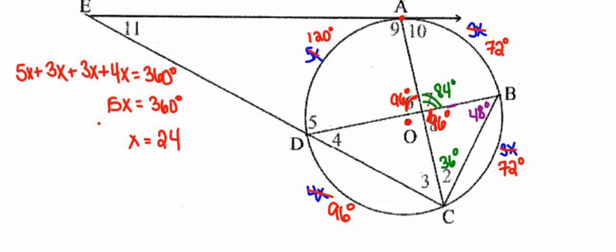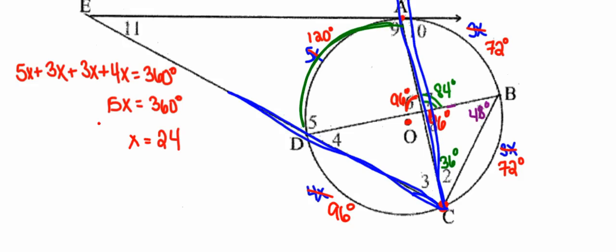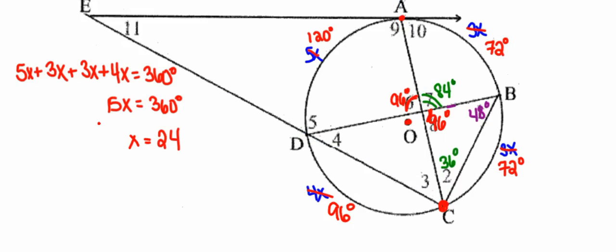Next is angle 3. Its vertex is on the circle, so it's an inscribed angle and its degree measure is half that of its intercepted arc. Extending its sides, the intercepted arc is 120 degrees. Half of 120 makes the degree measure of angle 3 equal to 60 degrees. I'll label that in the picture.